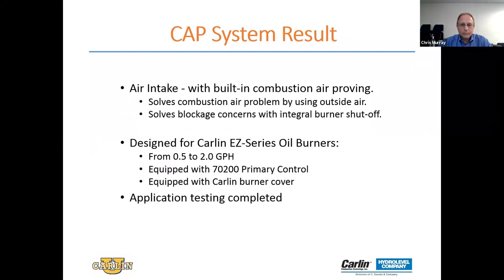The CAP system was something we looked at for a long time — something we felt was needed in the industry. Our design was that an air intake with built-in air proving solves the combustion air problem by using outside air, and it addresses blockage concerns with the integral shutoff. It's designed for the Carlin EZ series oil burners from 0.5 to 2 gallons per hour, and it's designed to work with a burner equipped with a 70200 Pro-X primary control.